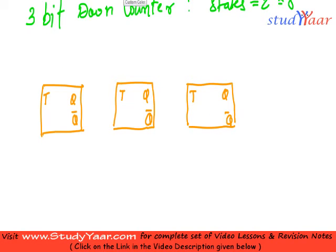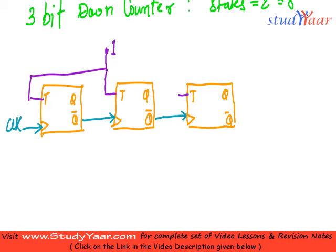So in a down counter, what we do is we connect - before that, let us draw the clocks. In a down counter, what happens is instead of doing like this that we did in up counter, what we do is this. We connect the complemented output to the clock. And over here, you are going to have your initial clock. Again, all the 3 inputs are tied together with logic 1. So this is your 3-bit down counter.